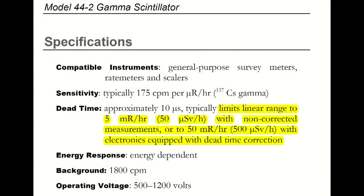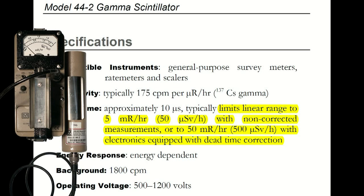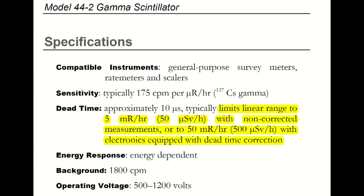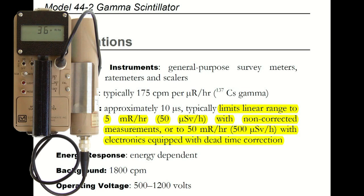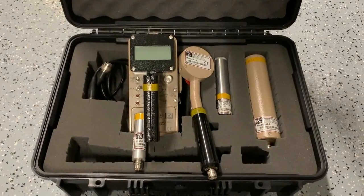If we look at the manual for the model 44-2 gamma scintillator on page 3, it talks about dead time. And it says that the dead time typically limits linear range to 5 mR per hour with non-corrected measurements. And that means with an analog rate meter like the Ludlum model 3 or the model 14c. But it can go up to 50 mR per hour if we have electronics that are equipped with dead time correction. That would be most of your rate meters that we see in these Ludlum response kits, like the model 2241 series rate meters.